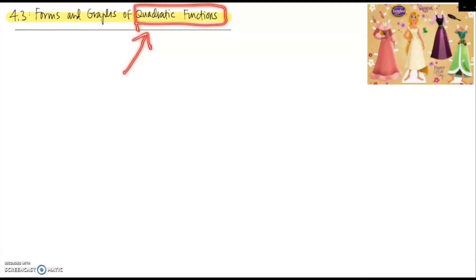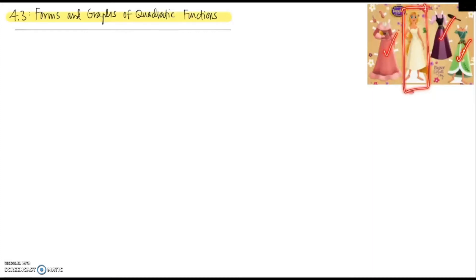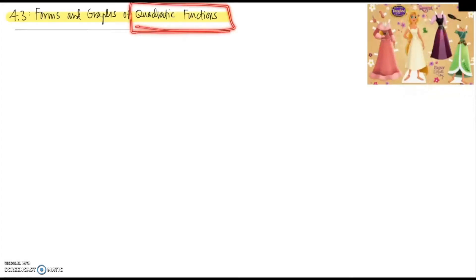We've seen the standard form of a quadratic function: y equals ax-squared plus bx plus c. I want us to think of an analogy — just like with a paper doll set, here's Rapunzel, and you could put different outfits on her, but underneath it's still Rapunzel. For a quadratic function, you can have different forms of it, but underneath it's still the same function — just written differently with a different dressing on it.